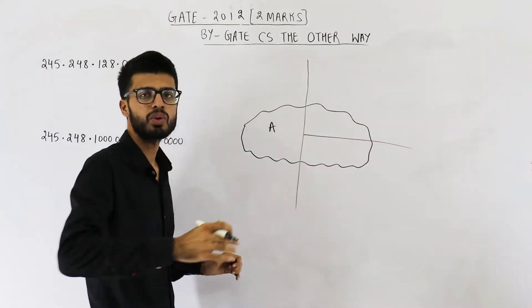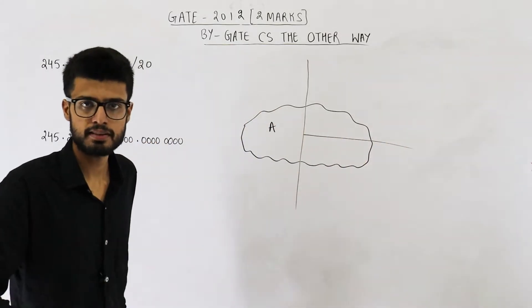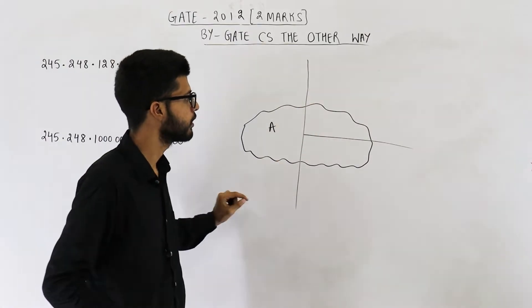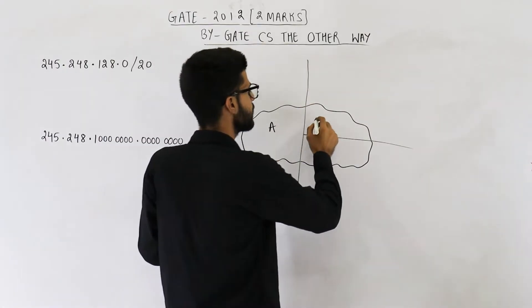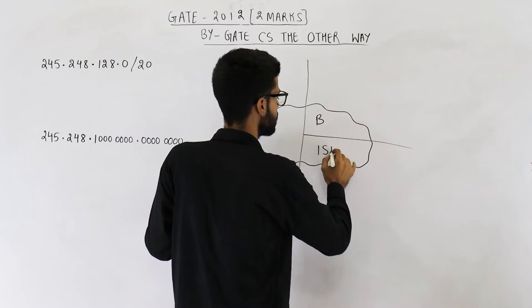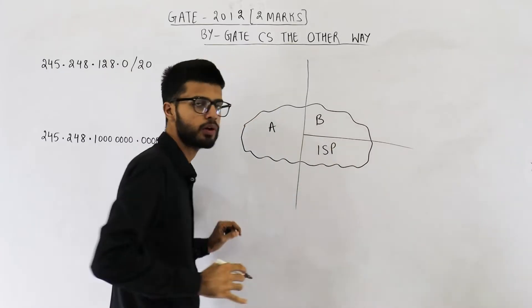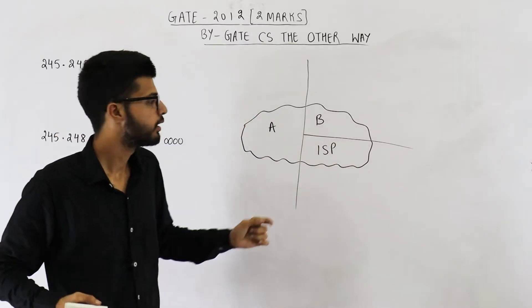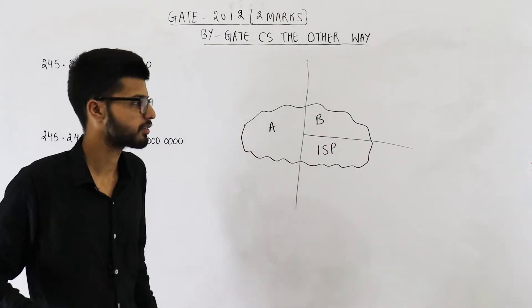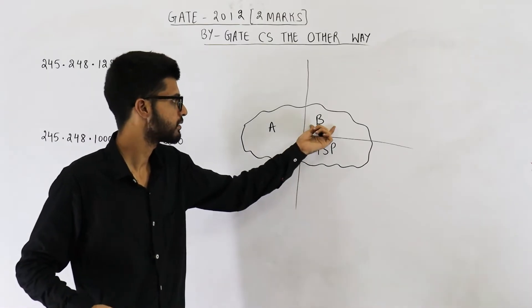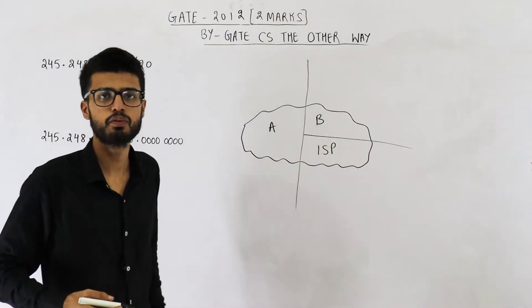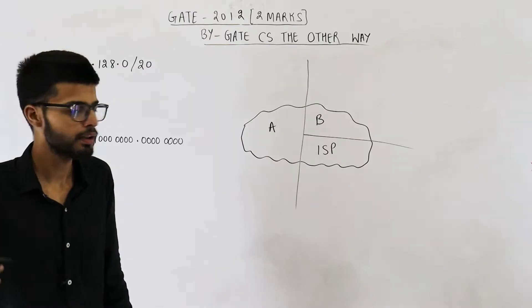For this remaining subnet, we are going to further subnet it into two smaller parts. One of them can be given to B and the other part the ISP can keep for itself. They are saying that B must get a quarter of IP addresses, so B is getting one fourth and the remaining ISP is keeping for itself.